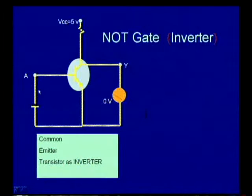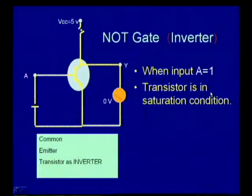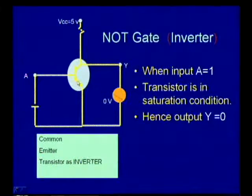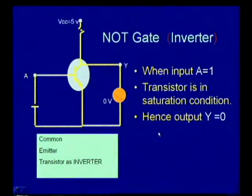The opposite is the case when this transistor is applied with full voltage. The switch is closed and voltage is applied. When the input logic condition is 1, A equal to 1, the transistor gets saturated, as good as a short circuit. So across this short circuit, the output voltage is obviously 0 volts. Therefore, when the input voltage is at logic 1 condition, the output voltage is at logic 0. Based on these two cases, we can confirm that a common emitter transistor can act as an inverter.